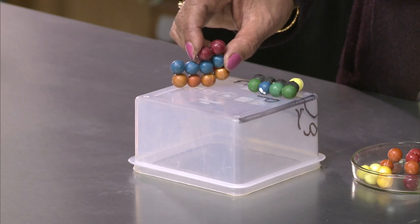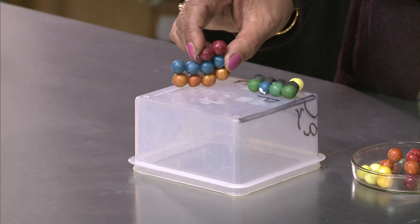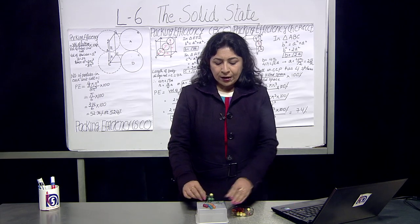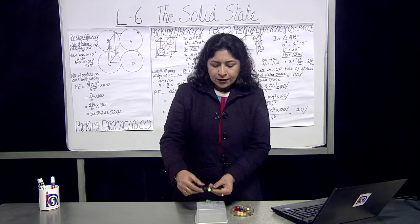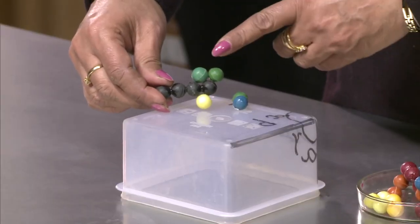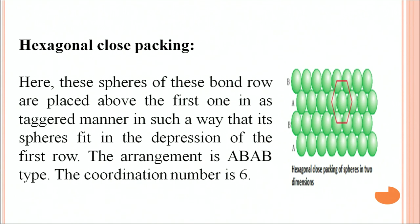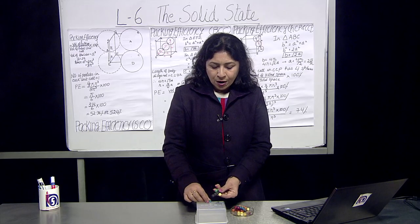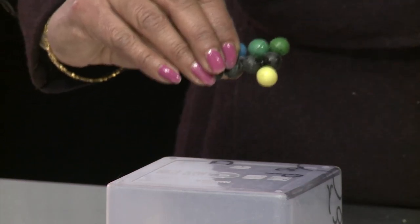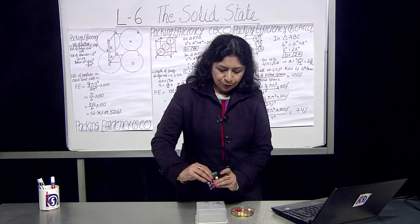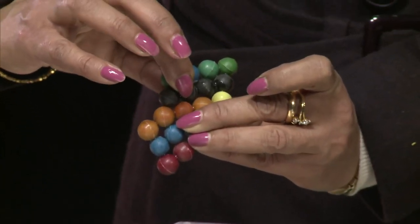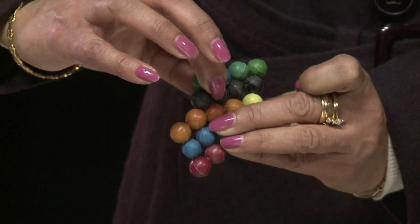This arrangement is called AAA type and the coordination number is four. Focus on any one atom at the middle — one atom is touching four other atoms. The other arrangement is hexagonal closed packing. Here the spheres of the second row are placed above the first one in a staggered manner such that each sphere fits in the depression of the first row. This arrangement is ABAB and the coordination number is 6 here. At the center, one atom is touching six different atoms, so the coordination number is 6.